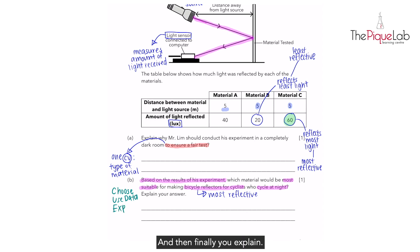And then finally, you explain. Why do we want the most reflective material? Because when material C reflected the most light, this means that it is the most reflective and most amount of light from the light source would be reflected off the bicycle reflectors made of material C, allowing the cyclists to be seen the most easily. And that's how you structure your answer.